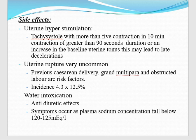Second, when there is more contraction, uterine rupture is very common — especially in previous cesarean section, if the patient is a grand multipara, and if there is obstructed labor. Risk factors are present. Then there are more chances of uterine rupture. The incidence is 4.3 to 12.5%.